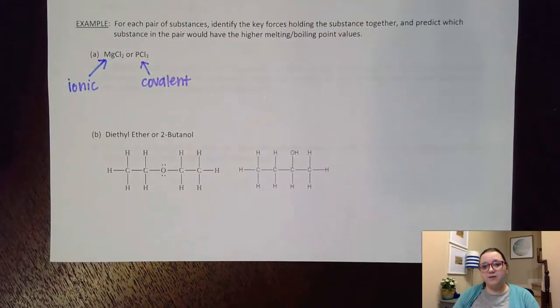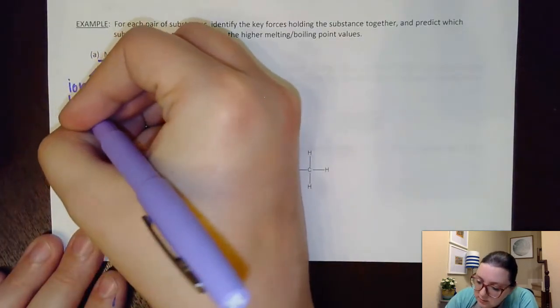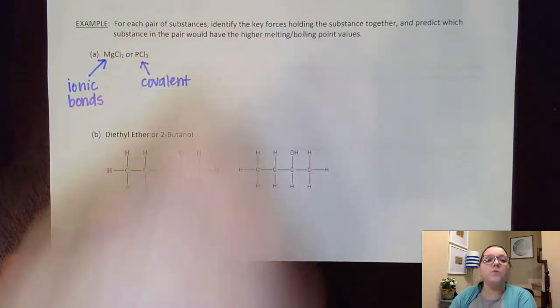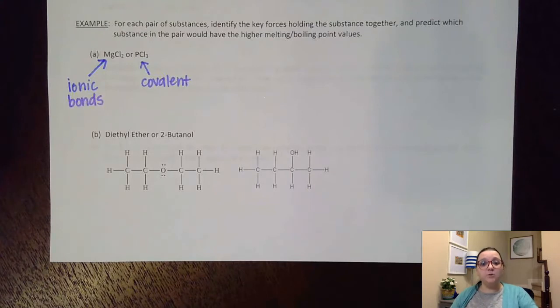Once I've made that identification, if I see a substance is ionic, metallic, or network covalent, then what that means is that bonds are what I would need to break to go between a solid, a liquid, and a gas.